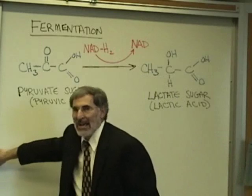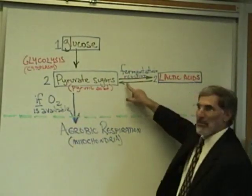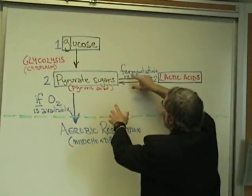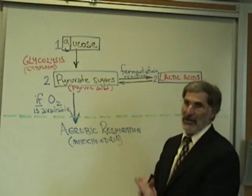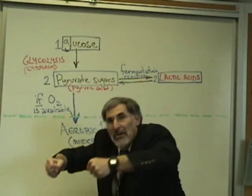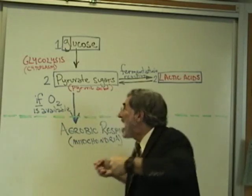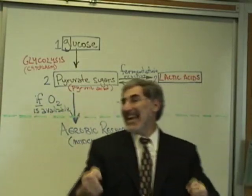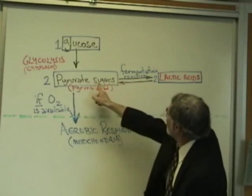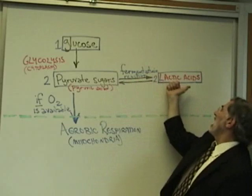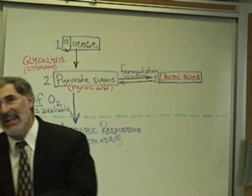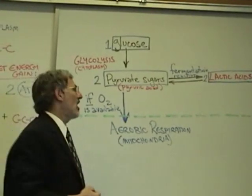This fermentation reaction is reversible. It occurred when there was not oxygen available, so the NAD temporarily transferred those pair of hydrogens onto the pyruvate sugar, turning it into lactic acid. When oxygen becomes available again, the NAD will pick up those pair of hydrogens from the lactic acid, turning lactic acid back into pyruvate sugar. Now the NAD can transfer these hot potato hydrogen atoms onto oxygen.